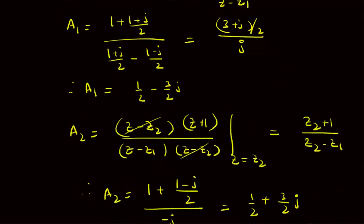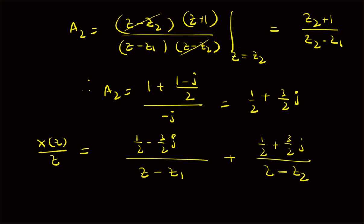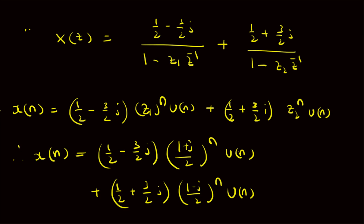Similarly, A2 is found to be 1 by 2 plus 3 by 2 J. Then X of Z by Z equals (1 by 2 minus 3 by 2 J) divided by Z minus Z1, plus (1 by 2 plus 3 by 2 J) by Z minus Z2. We rewrite X of Z as (1 by 2 minus 3 by 2 J) divided by 1 minus Z1 Z-inverse, plus (1 by 2 plus 3 by 2 J) divided by 1 minus Z2 Z-inverse — a formulation convenient for finding the inverse Z-transform. Assuming causal signals, X of N equals (1 by 2 minus 3 by 2 J) times (1 plus J by 2)-power-N U(N), plus (1 by 2 plus 3 by 2 J) times (1 minus J by 2)-power-N U(N). That is the final inverse Z-transform — the time domain sequence corresponding to the given X of Z.